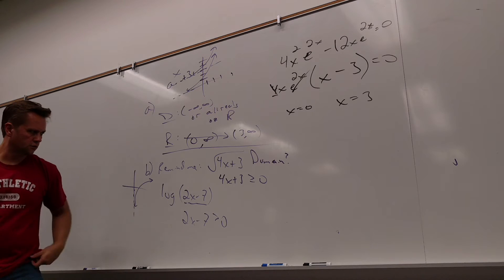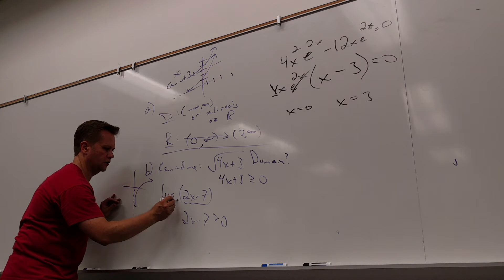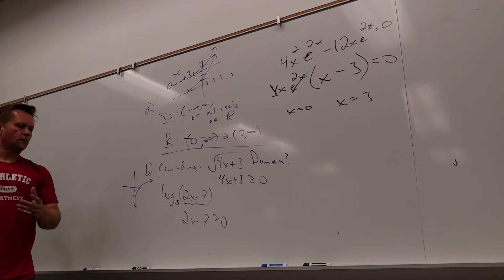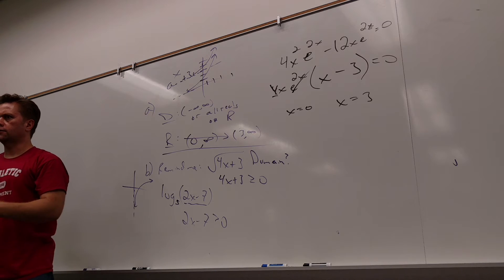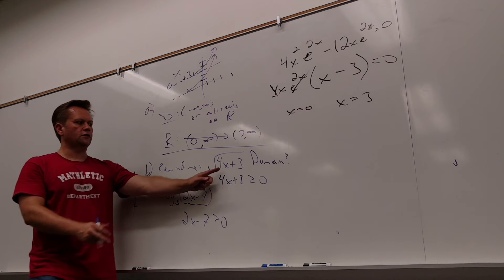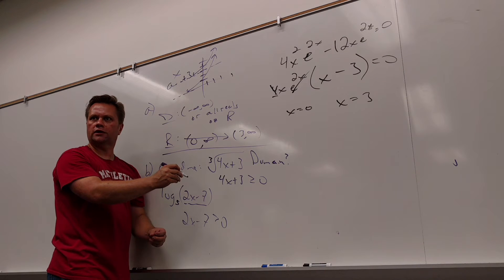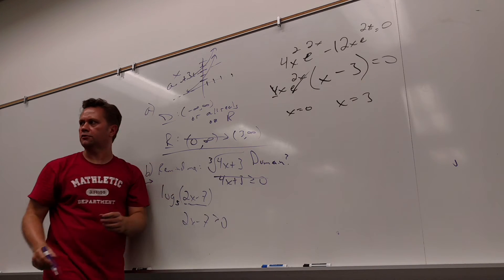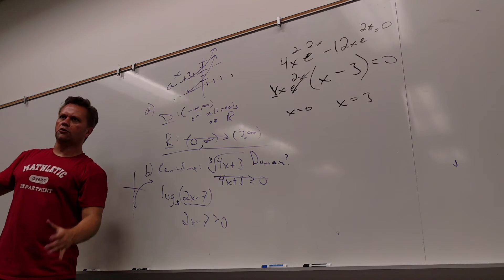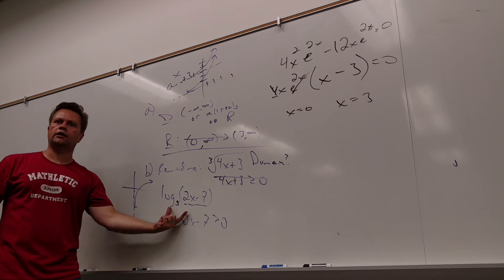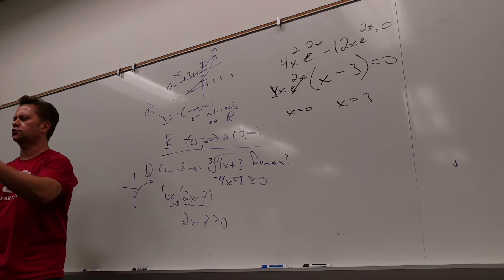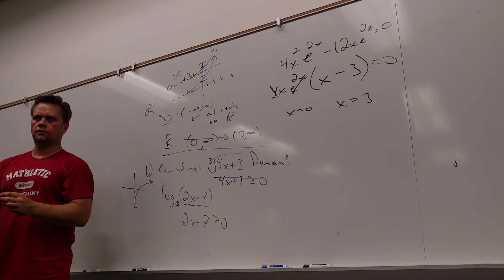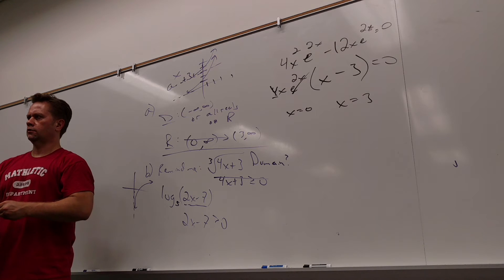The base doesn't change anything — no matter what the base is, the inside has to be greater than 0. Now, if this were a cube root instead, the domain would be all real numbers, because cube roots and all odd roots can handle any input. But don't try to make logarithms too much like radicals — be careful, some things are similar but don't over-apply the analogy.